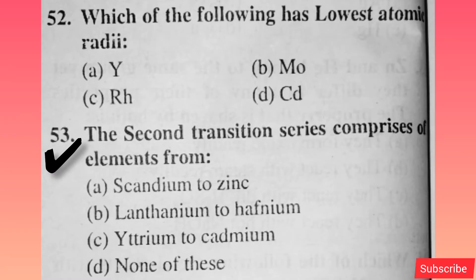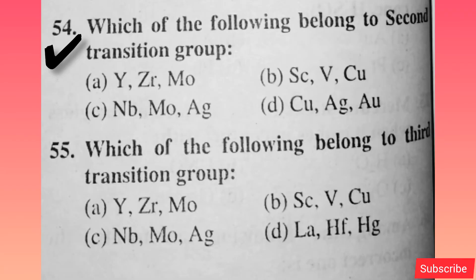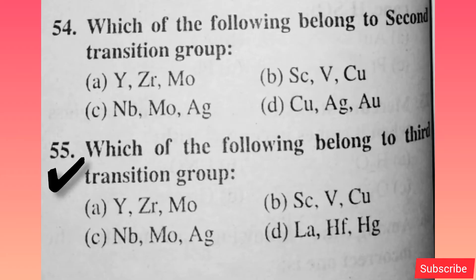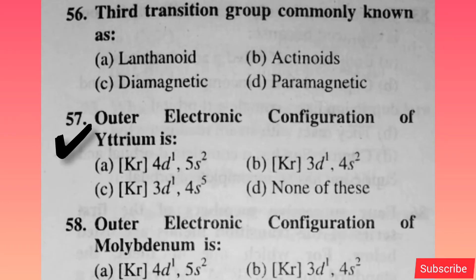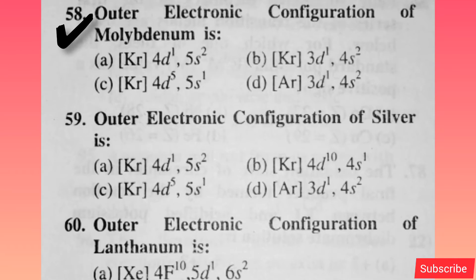The second transition series comprises elements from — option C is correct. Which of the following belongs to the second transition group? Option C is correct. Which of the following belongs to the third transition group? Option D is correct. The third transition group is commonly known as lanthanoid — option A is correct. Outer electronic configuration of yttrium is — option A is correct. Outer electronic configuration of molybdenum is — option C is correct.